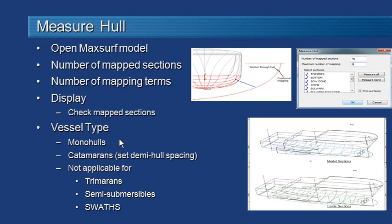We can analyse monohulls or catamarans and we need to set the demi-hull spacing of catamarans. But you should be aware that you cannot model trimarans, semi-submersibles or SWATHs with SeaKeeper. The SWATHs are a catamaran of course, but because of the very small water plane area, it's not possible to get accurate results for that type of vessel using the approach in SeaKeeper.